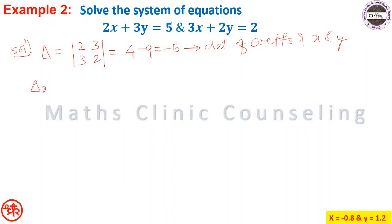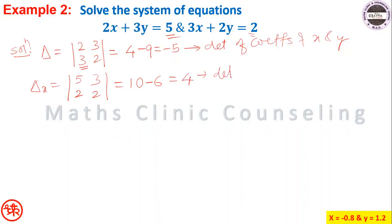Delta_x: replace coefficients of x by constants 5 and 2, keeping y-coefficients 3 and 2 as they are. So delta_x equals the determinant [5, 3; 2, 2], which is 10 minus 6, equal to 4. This is the determinant of constants and coefficients of y.